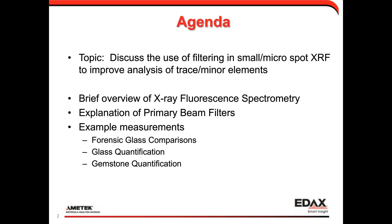Trace I define as below 1 weight percent. Minor elements I define as between 1 to 10 weight percent. I'll run briefly through X-ray fluorescence spectrometry, then talk about primary beam filters — where they're located, what they do, how they improve the spectrum, and what the tradeoffs are. Then I'll go through a few example measurements: forensic glass comparisons, glass quantification, and gemstone quantification. I hope you'll see how you can extend these measurements to other materials, whether geologicals, metals, or metal alloys.